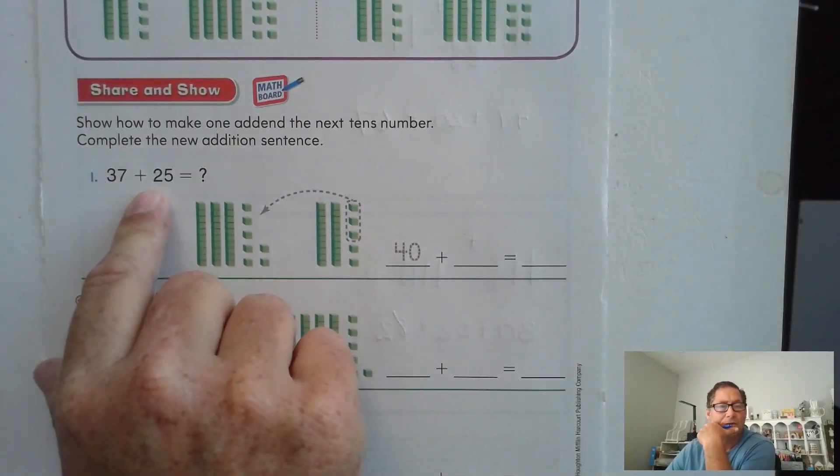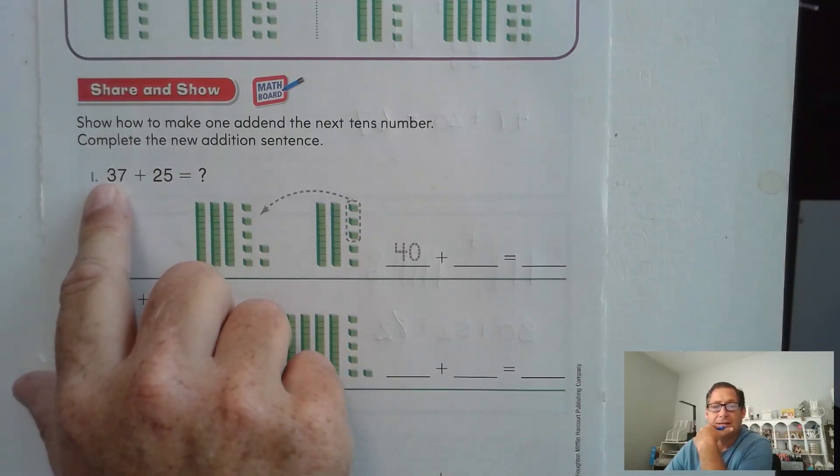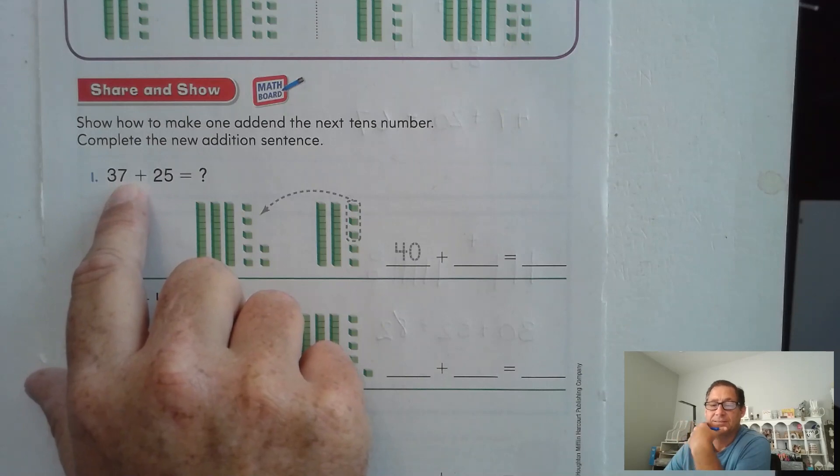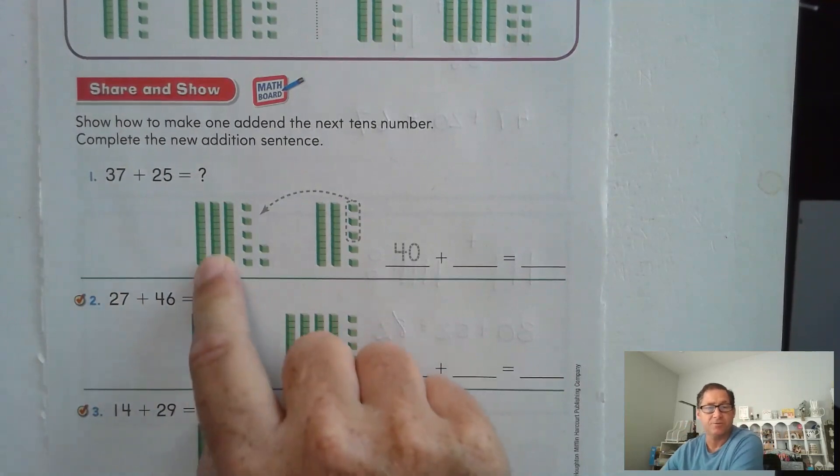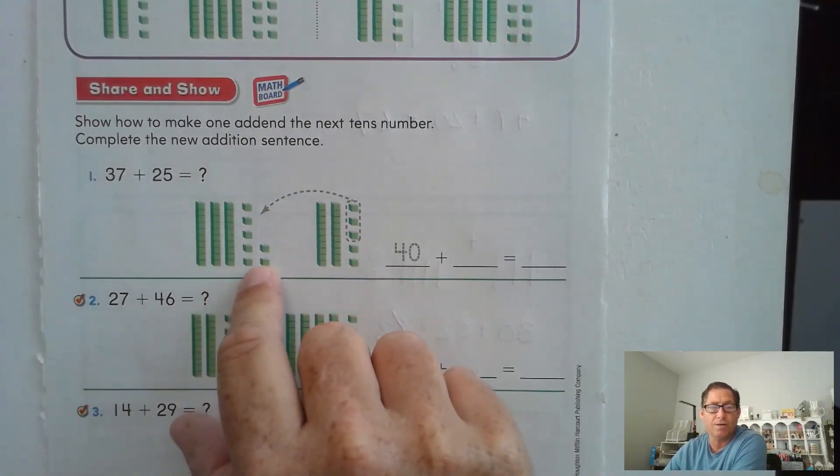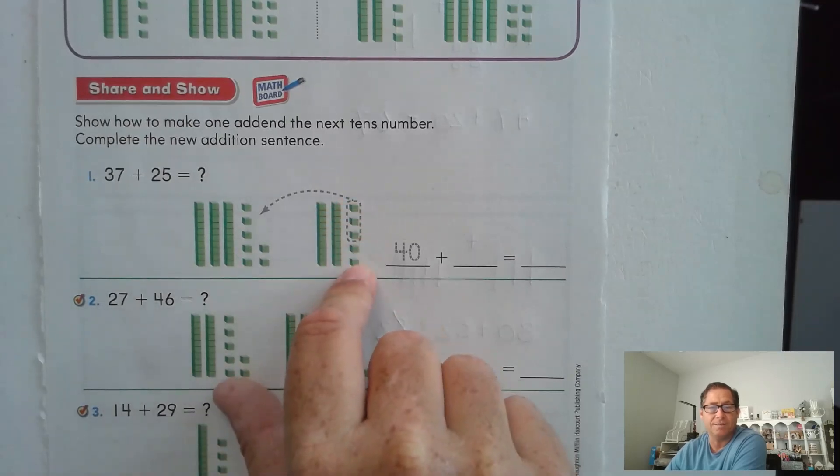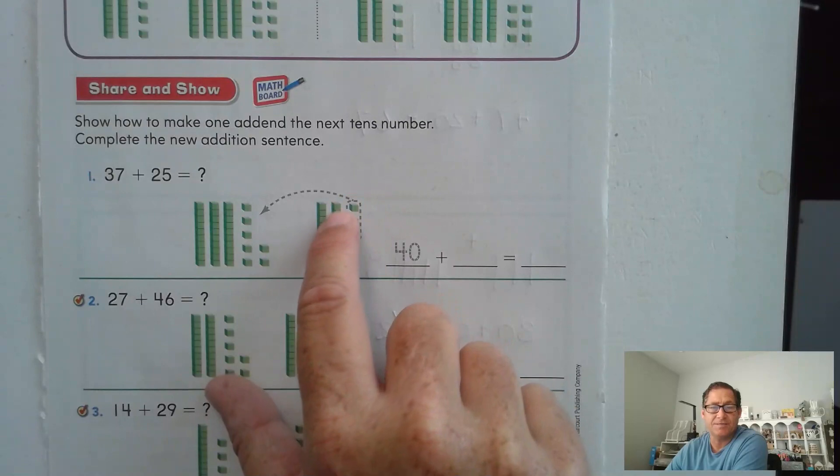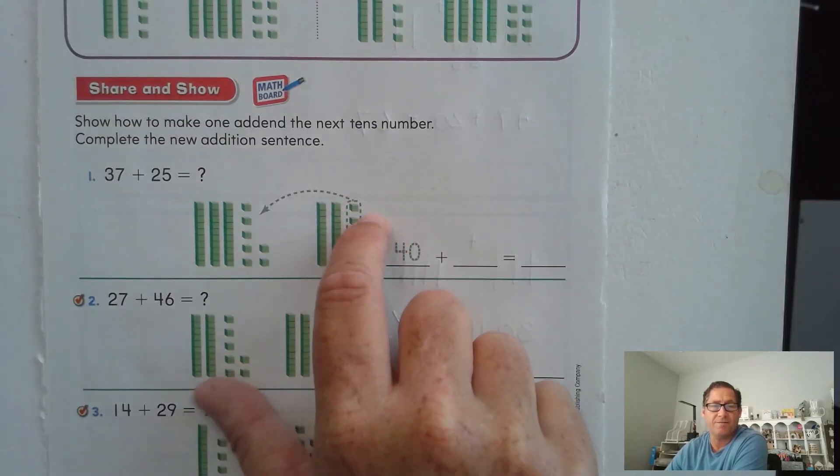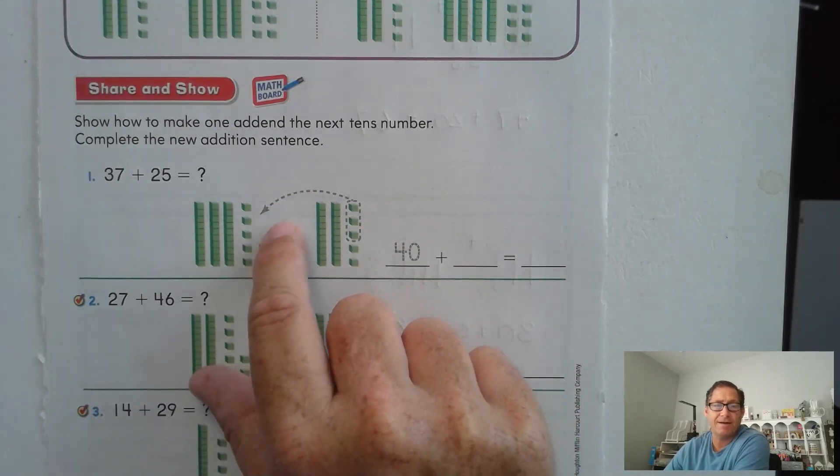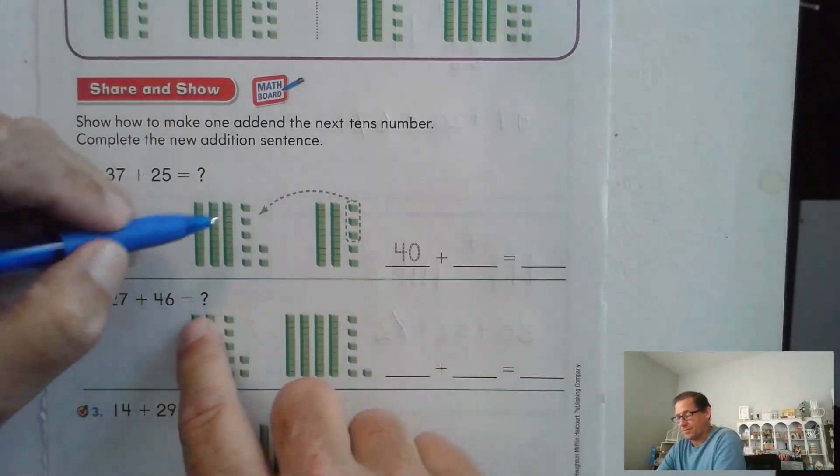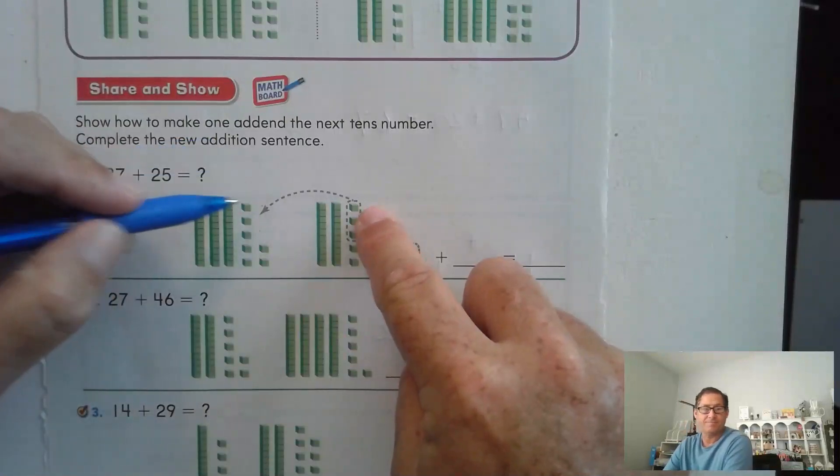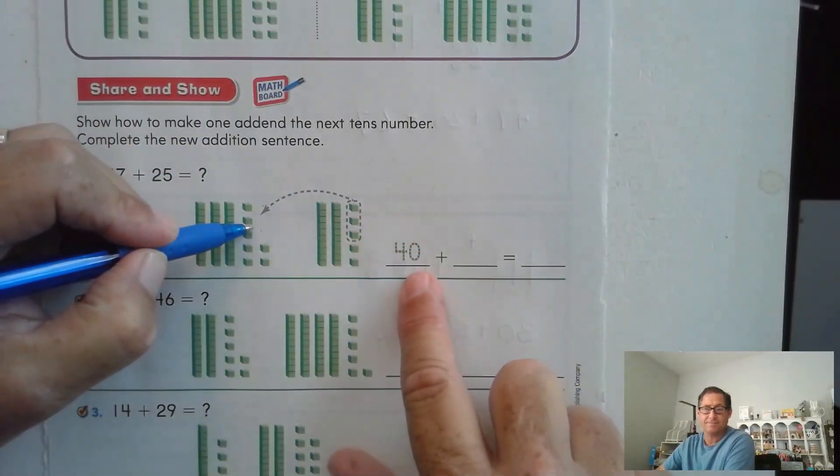37 plus 25. Well, again, I would turn 37 into the closest, the next closest 10. So 37 is closer to 40 than 25 is to 30, but it doesn't matter which one you do. You could have turned 25 into 30, but let's look here. So let's look at our picture. We have 30 and seven ones, plus two tens and five ones. Well, seven plus three makes another 10, right? So we're going to take three ones from 25, give it to the 37. If we give that three ones to the 37, now we have four tens, right? Seven, eight, nine, 10 from here. So 10, 20, 30, 40. That's why we see 40 here.